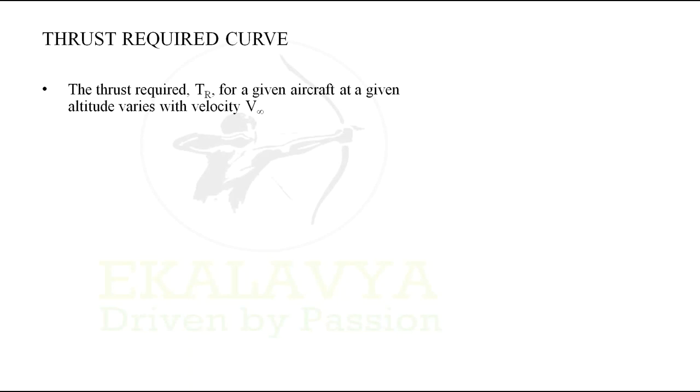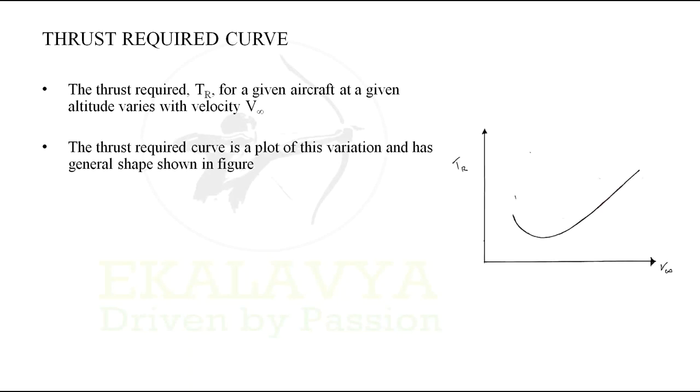The thrust required TR for a given aircraft at a given altitude varies with velocity V infinity. The thrust required curve is a plot of this variation and attains the general shape as shown in figure.